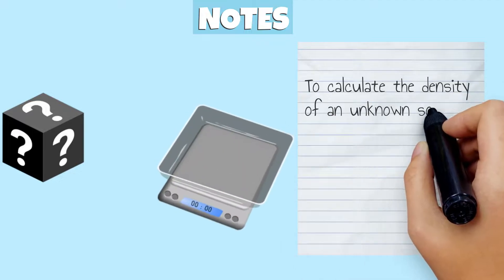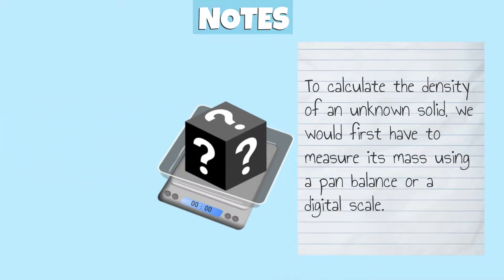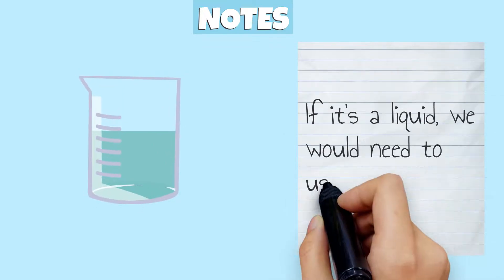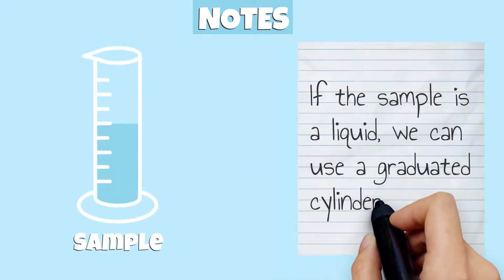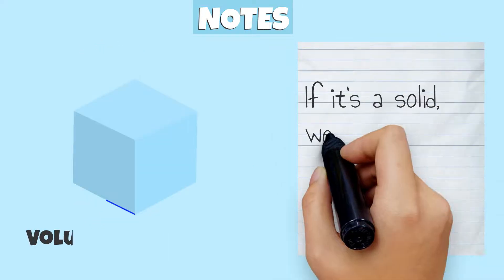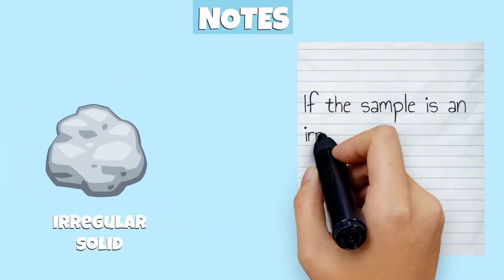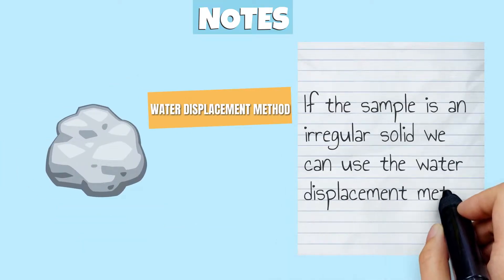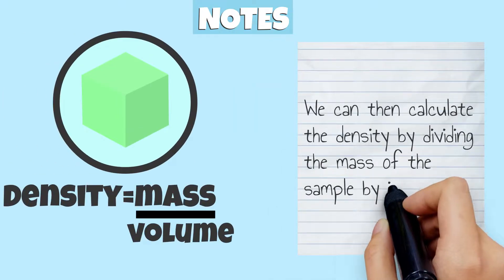To calculate the density of an unknown solid, we'd first have to measure its mass using a pan balance or digital scale. If it's a liquid, we would need to use a container. Next, we would measure the volume of the sample. If the sample is a liquid, we can use a graduated cylinder. If it's a solid, we can use the formula v equals l times w times h. If the sample is an irregular solid, we can use the water displacement method. We can then calculate the density by dividing the mass of the sample by its volume.